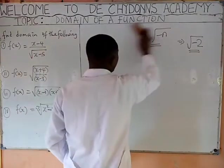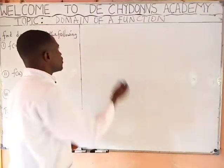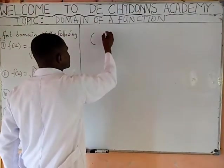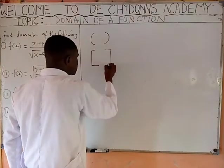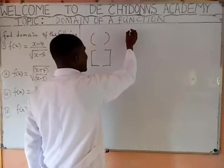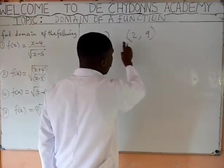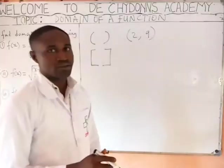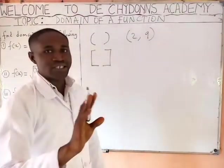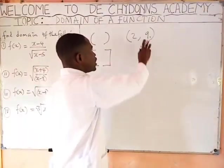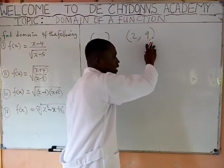Now, to solve this, there are some terms we will be making use of: open bracket and close bracket. When you see something like (2, 9) with open brackets on both sides, it means that 2 is not included and 9 is not included, because both are open brackets.